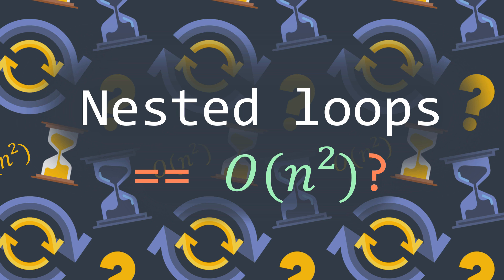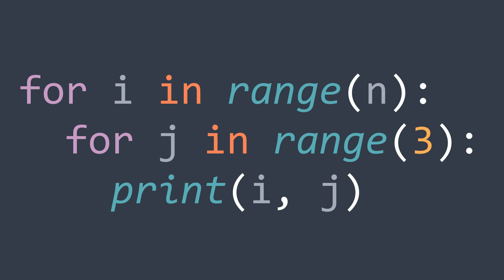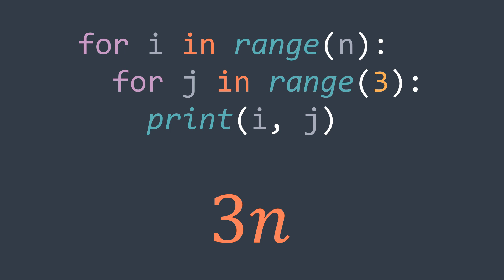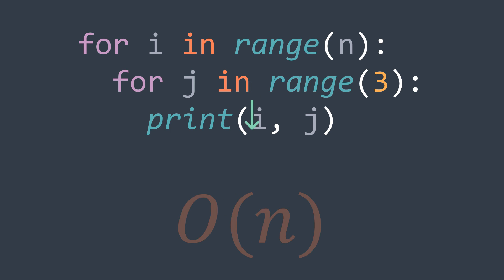First, we have the cases where it's obvious that it's not O(n²). For example, when one of the loops is repeated a constant amount of times — like here, the second loop is always repeated three times no matter the value of n, so we get 3n, and by ignoring the constant we get O(n) time complexity.